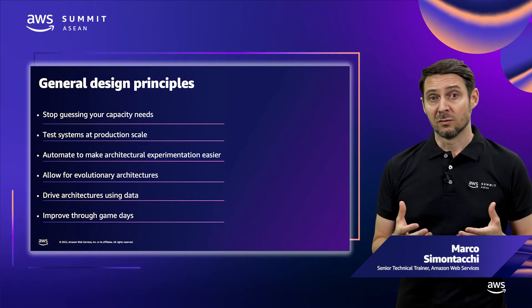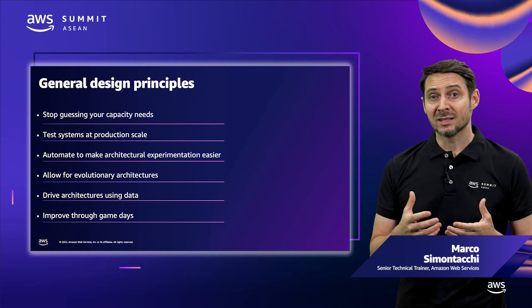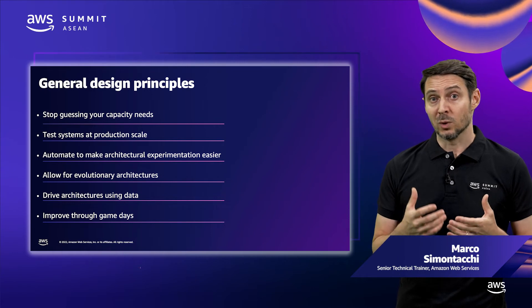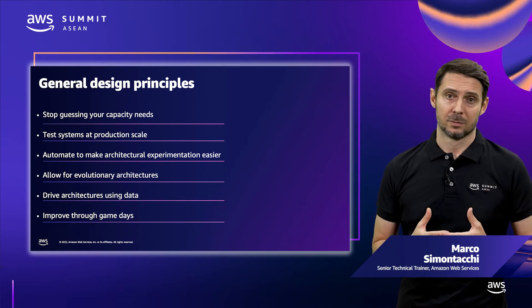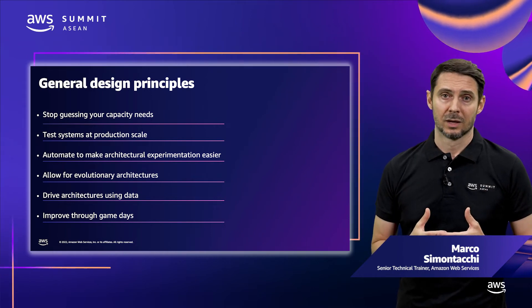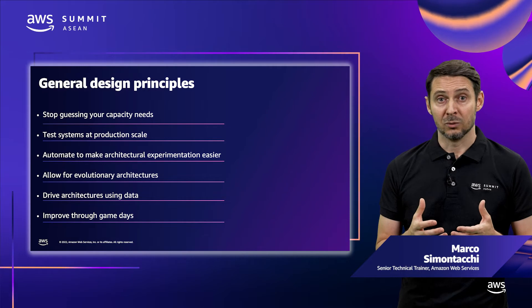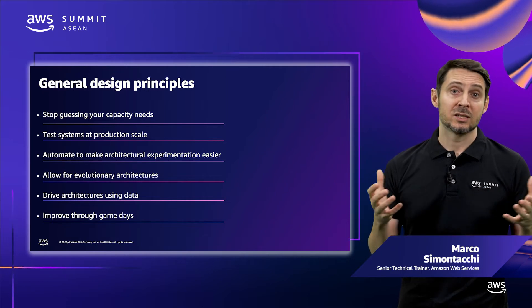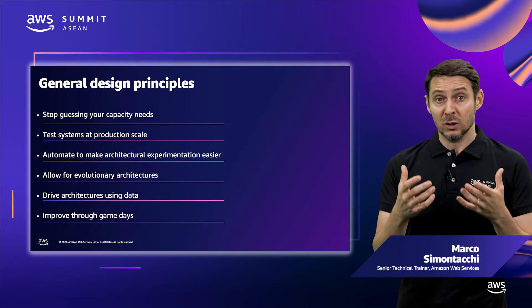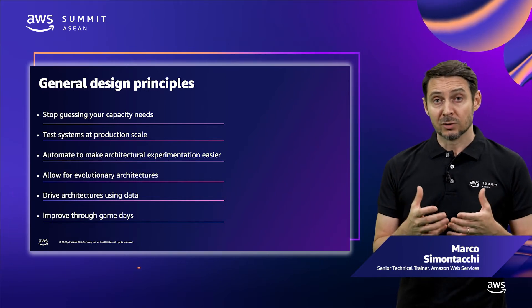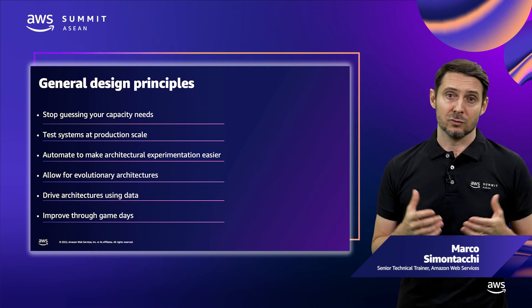In a traditional environment, you would only exercise your runbook when something bad happened in production. In the cloud, constraints have been removed, so you can use these principles to take advantage of that.